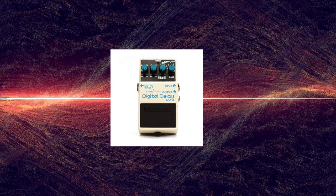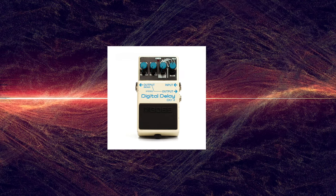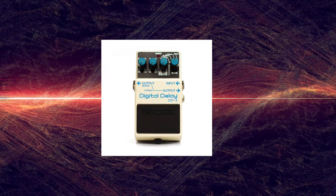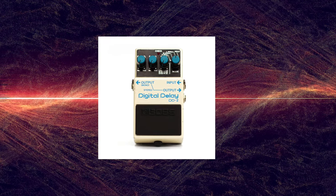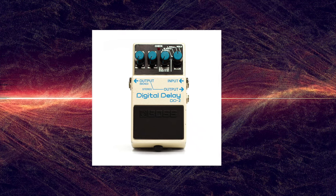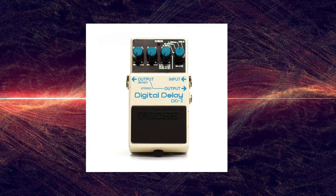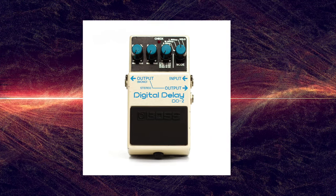Popularized by Brian Eno, Boss released the DD2, the world's first digital delay pedal in 1984, ushering in a new era of time-based effects. Digital delays offer more sophisticated and complex effects than traditional analog delay, such as reverb, time stretching, and even pitch shifting.